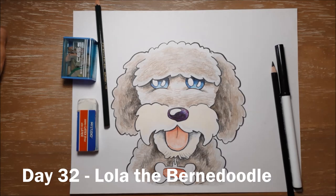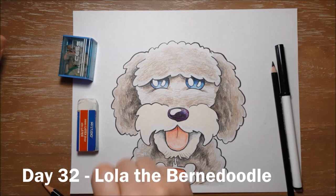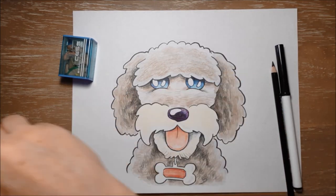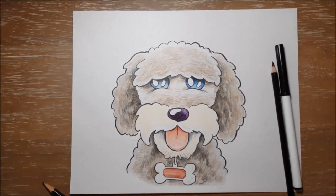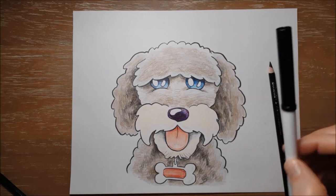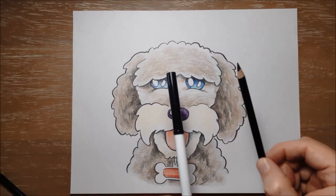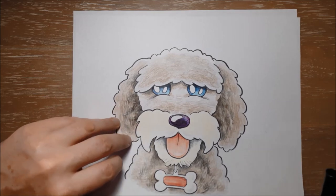This is Lola the Bernadoodle and to draw Lola you will need a pencil and an eraser to erase any mistakes and maybe a pencil sharpener and definitely a black marker or a black pencil crayon to outline when you're done. But as usual I'm going to use a grey marker just so you guys can see what I'm doing as I draw.